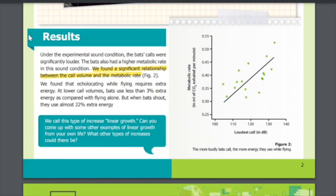Results: Under the experimental sound condition, the bats' calls were significantly louder. The bats also had a higher metabolic rate in this sound condition. We found a significant relationship between the call volume and the metabolic rate, as seen in Figure 2. The more loudly bats call, the more energy they use while flying.